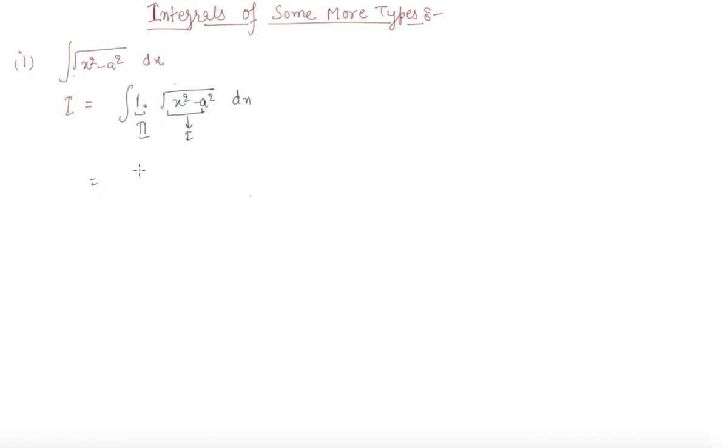By applying the by-parts, the first as it is integration of second is x minus integral differentiation of first which is 2x over root of x square minus a square into integral of second is x, and there is also 1 by 2 for the power.